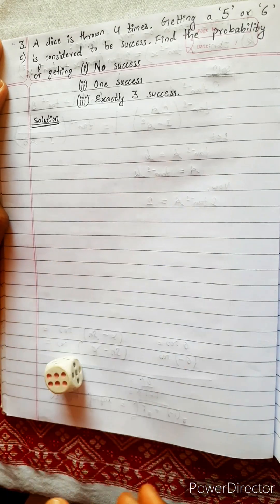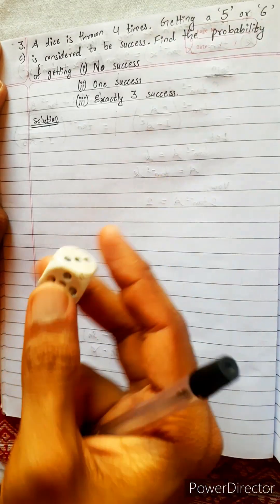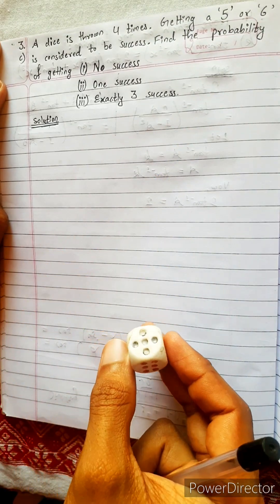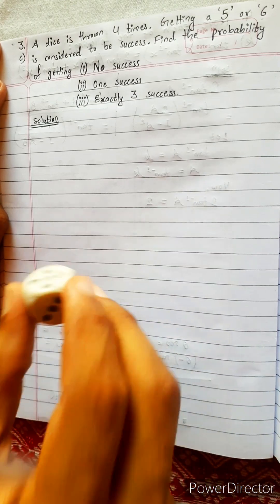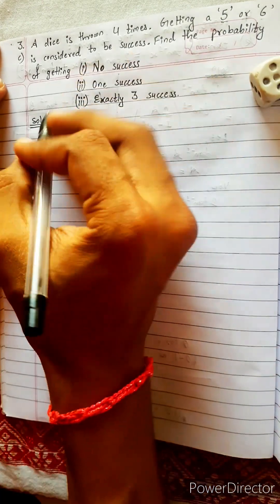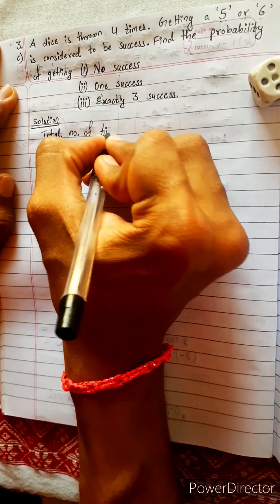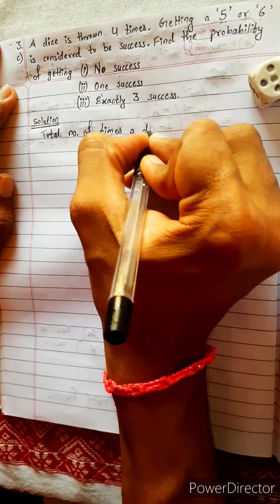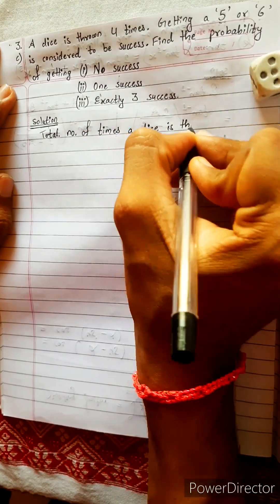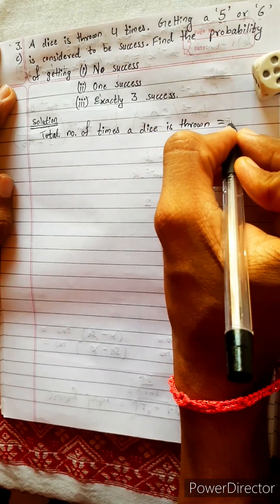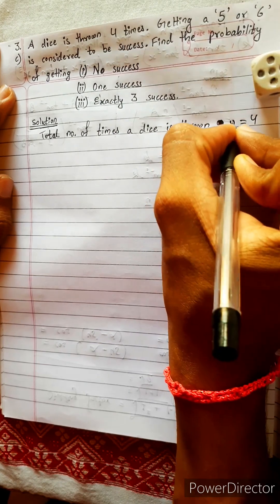A dice is thrown four times. We have to get a five or six — either five or six is our success. If we don't get these two, it is our failure. We throw this four times, so the total number of times the experiment is repeated: n equals four.